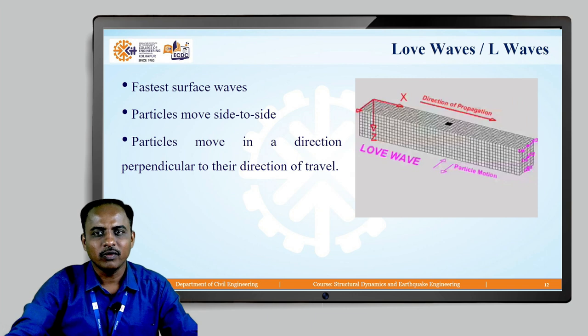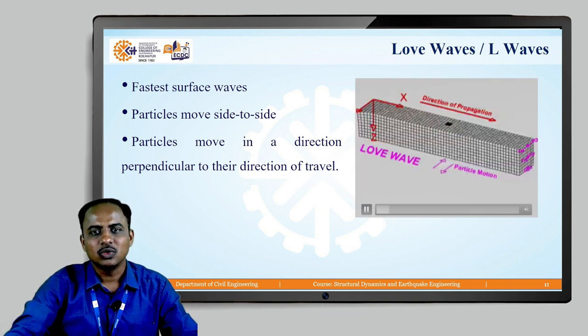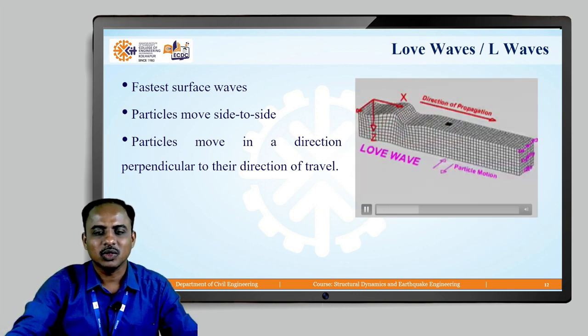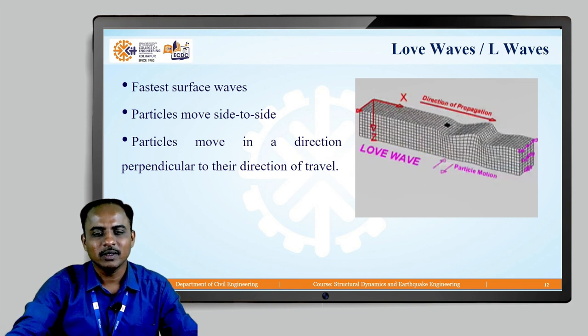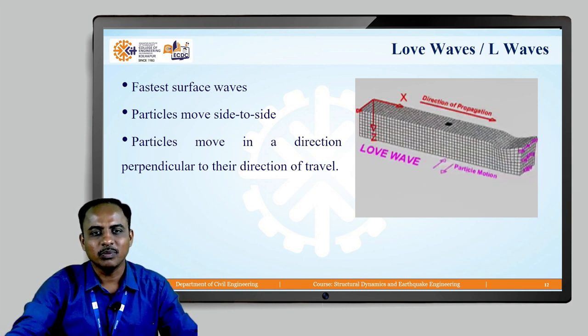We also have Love waves, or L waves. These are the fastest surface waves but slower than body waves. The particles move side to side, in a direction perpendicular to the direction of travel.